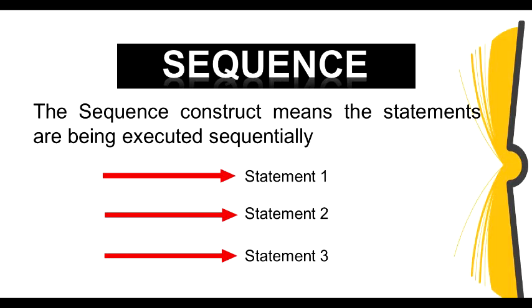In this slide, we are going to discuss the sequence construct. What is sequence construct? The sequence construct means the statements are being executed sequentially. Statement 1, statement 2, and statement 3. Every Java function execution begins with the first statement, and each statement in turn is executed. When the final statement of the function is executed, the function is done. This construct specifies the normal flow of control in a program and is the simplest one.